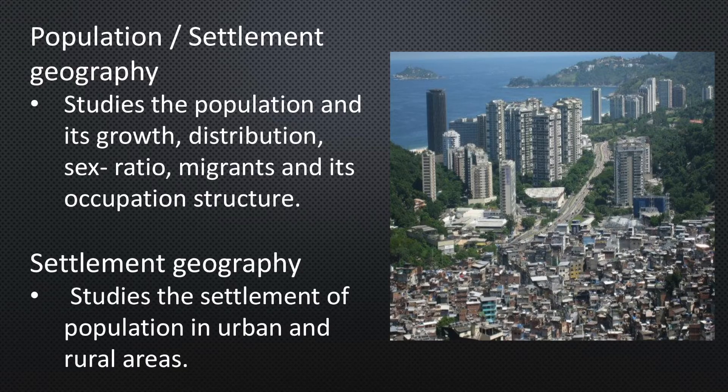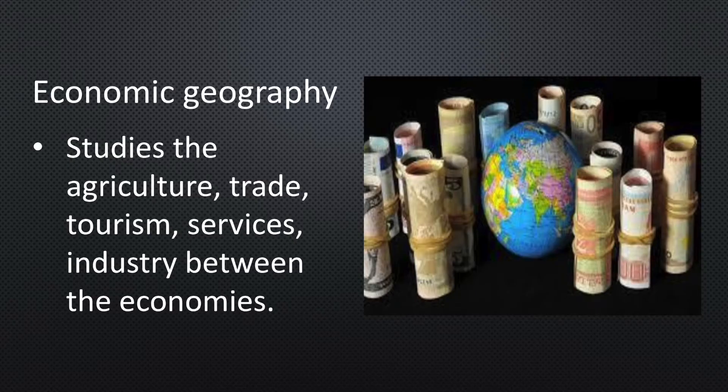Population and settlement geography: it studies population growth and distribution, density, sex ratio, migration, age structure, occupational structure, etc. Settlement geography studies the characteristics of rural and urban settlements. Economic geography: it studies the economic activities of the people including agriculture, industry, tourism, trade, transport, infrastructure and services, etc.